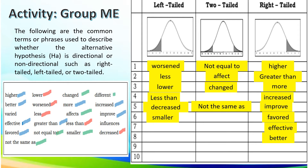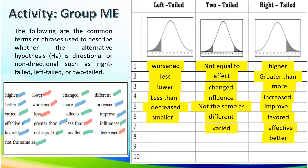Effects, different, varied, and influenced are all under two-tailed. Remember these words so you can translate a given alternative hypothesis.